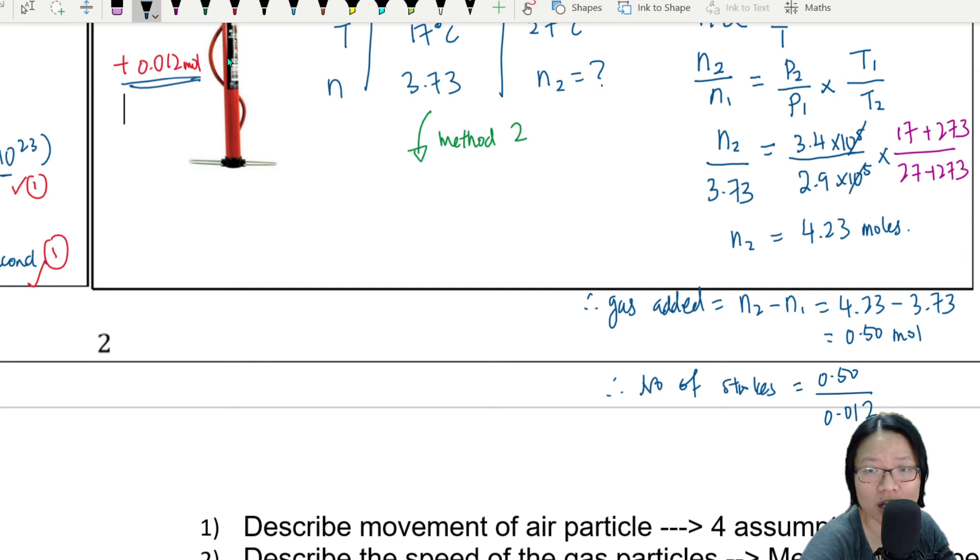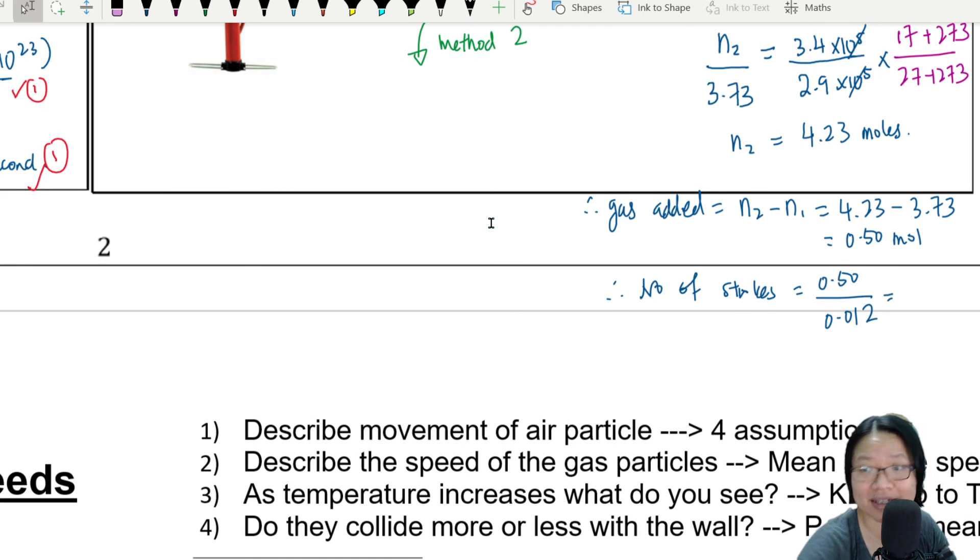So then you can say: number of strokes. Strokes. Now, each stroke adds 0.012 moles, so we will take 0.50 divided by 0.012.